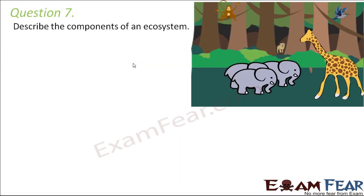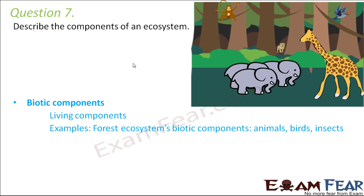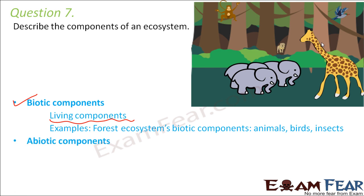Question number seven: Describe the components of an ecosystem. An ecosystem primarily has two components — biotic components and abiotic components. Biotic components are the living organisms of the ecosystem. For example, in a forest ecosystem, all the animals, birds, and insects form the biotic components.